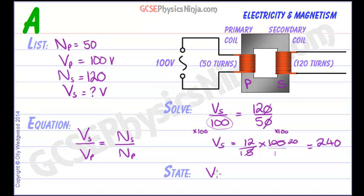Now we need to state the answer with the correct units. So VS is 240 volts on our output secondary coil. That is indeed a step-up transformer because we had 100 volts in and now we have 240 volts out.